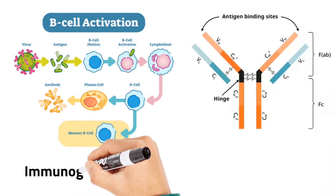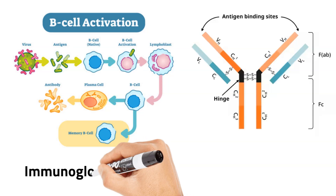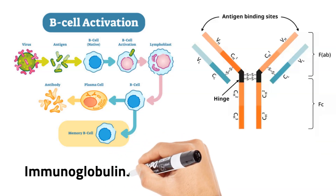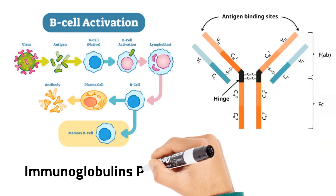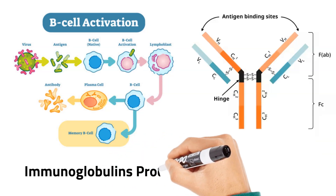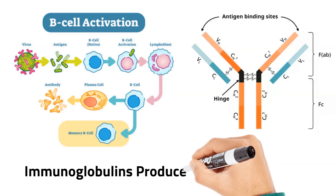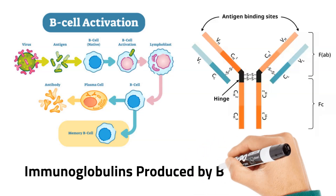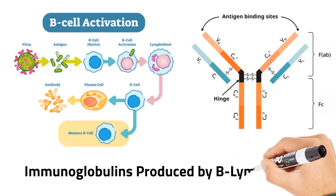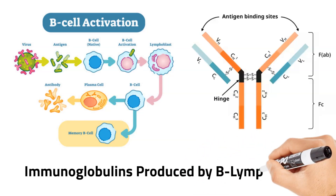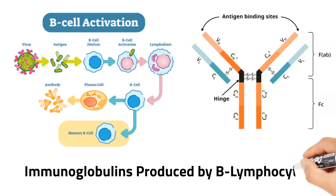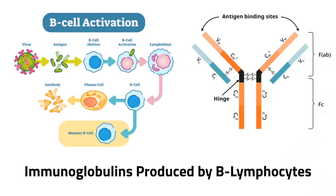The upper portion is referred to as the fragment-antigen binding or FAB region, which is highly variable and allows for the specific binding between the antibody and antigen. The bottom portion is referred to as the fragment-crystallizable or FC region, which is highly conserved and is a critical determinant in the antibody isotype or class.